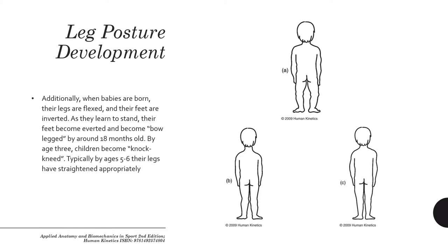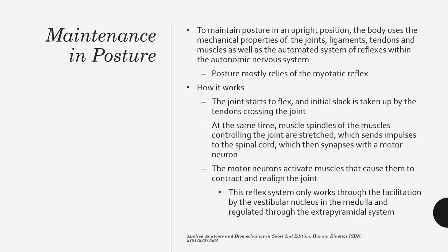When born, an infant's legs are flexed and feet are inverted or turned in. As they learn to stand, feet become everted and they develop a bow-legged stance by around 18 months — a wide stance with lots of space between the knees. By age three, children start redistributing their weight and become knock-kneed. Around ages five or six, once they've developed a good cadence to their walking and running, everything straightens out appropriately.